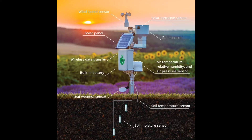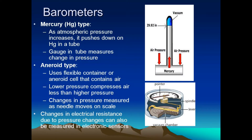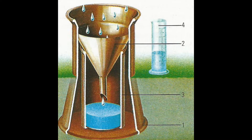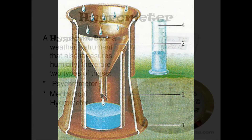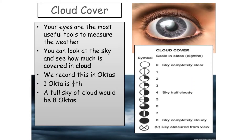For temperature, we use the thermometer. For air pressure, the barometer. For rainfall, the rain gauge. For humidity, the hygrometer — and yes, there's a G in it. For cloud cover, this one is a little tricky: you use your eyes. Yes, your eyes is actually the instrument.